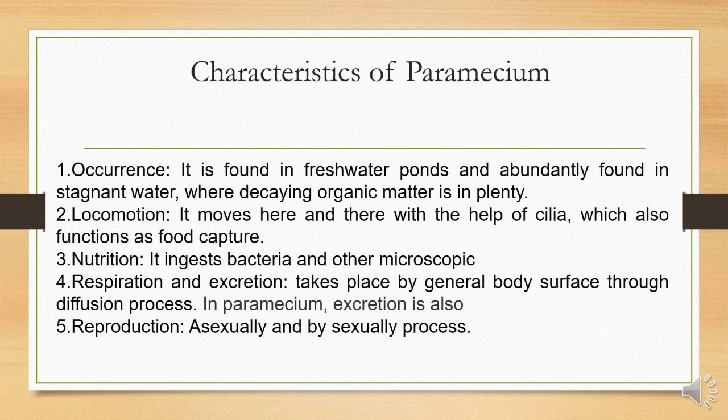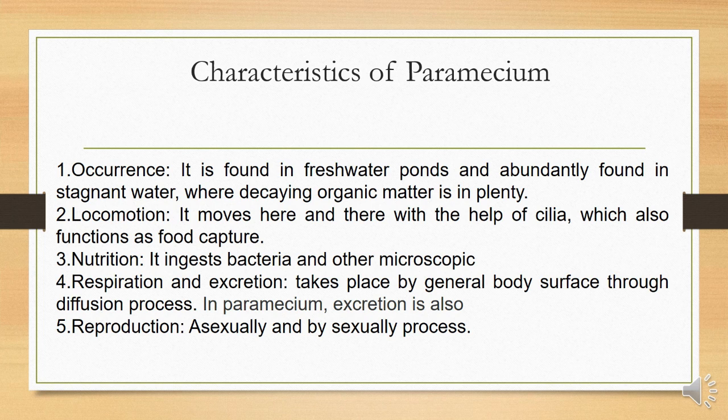The characteristics of paramecium include that it is found in freshwater ponds and is abundantly found in stagnant water where decaying organic matter is plentiful. For locomotion, it moves with the help of cilia, which also functions in food capture. The cilia is not only for movement but also to capture food present in the water, in the form of bacteria and other microbes.